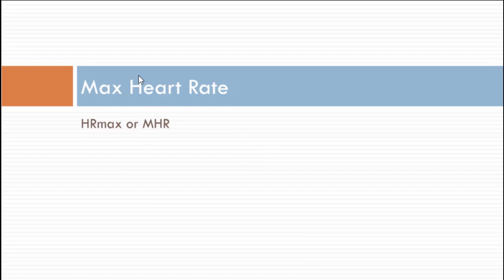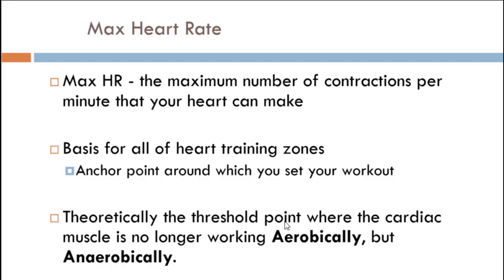Now let's get into max heart rate. Max heart rate is basically how fast your heart can beat without failing. The reason it's important to us is not because we want to know how much we can handle — it becomes the basis for our targeted physiological training zones. We want to hit a certain exercise intensity to elicit specific physiological responses. Theoretically, it's the point at which the heart shifts from working aerobically toward anaerobically, and the body impairs the muscles' ability to produce force to prevent that.